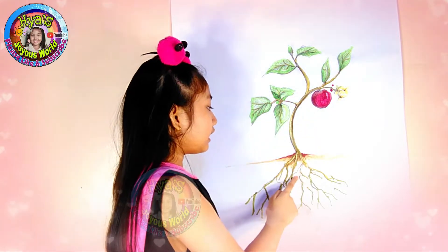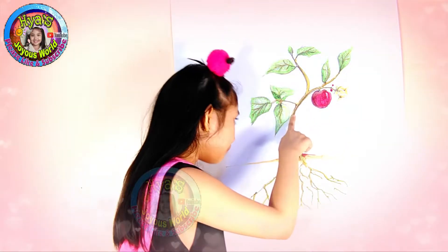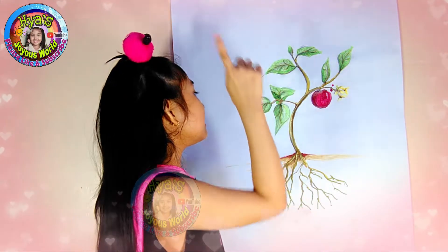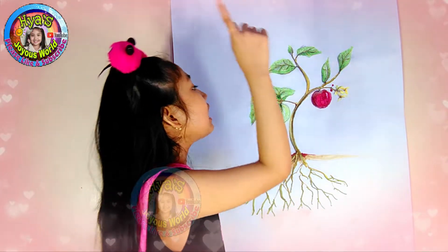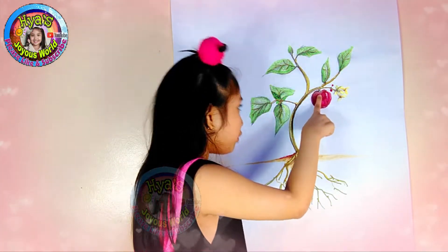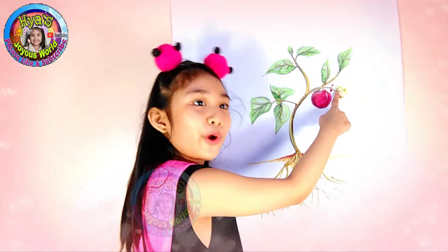This is the roots. This is the stem. This is the leaves. This is the fruit. This is the flower. Thanks for watching.